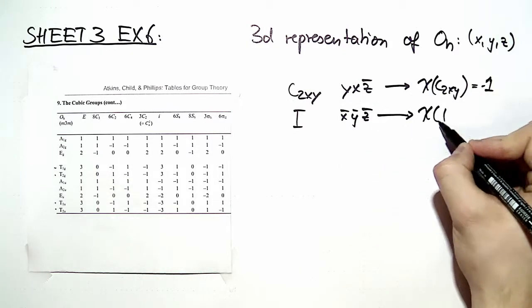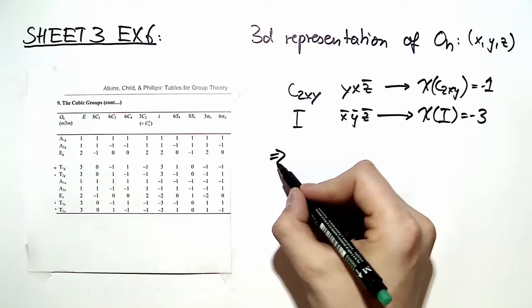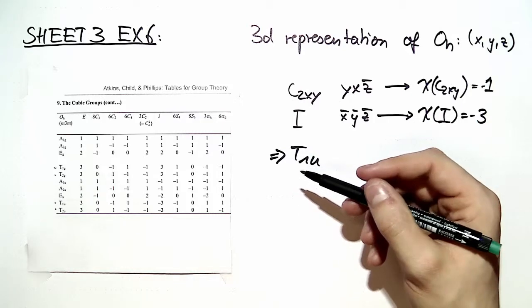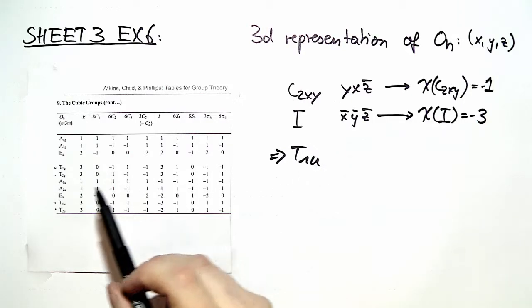Therefore, the character of the inversion is minus three, and we can immediately deduce that therefore t1u is the corresponding irreducible representation in the OH group.